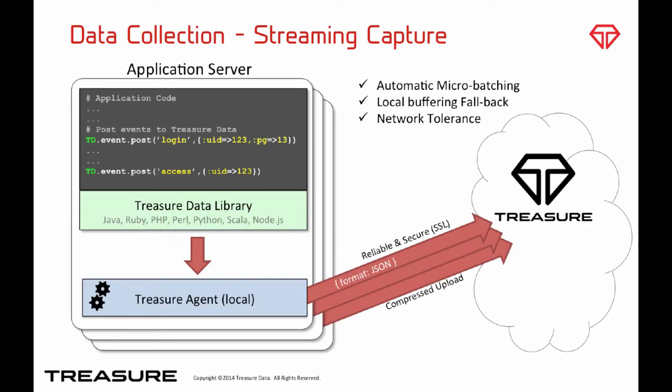Here is a visual representation of how this process works. The idea is to have your application build a map of key-value pairs for each event in your input data stream and log each map to the locally running Treasure Agent. In turn, the Treasure Agent buffers, compresses, and uploads the event securely in MessagePack format — a form of binary compressed JSON — to TreasureData's cloud infrastructure.